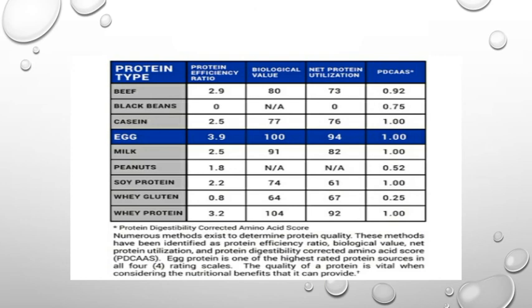For egg: protein efficiency ratio is 3.9, biological value is 100, net protein utilization is 94. PDCAAS — protein digestibility corrected amino acid score — for beef: PER is 2.9, biological value 74, net protein usability 73, and PDCAAS is 0.92.